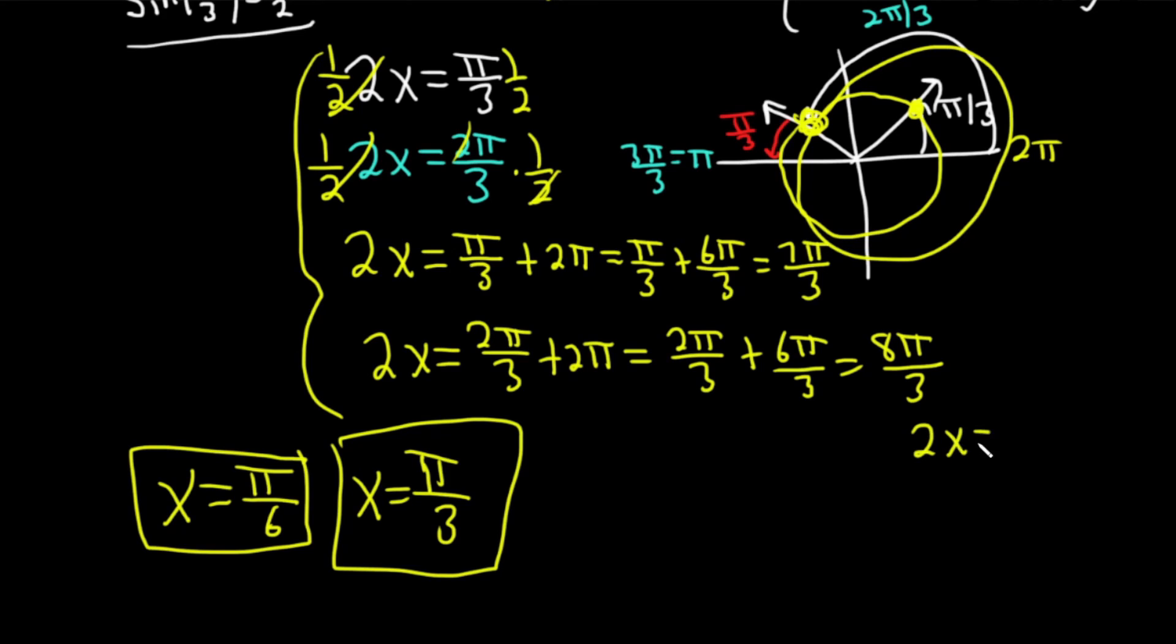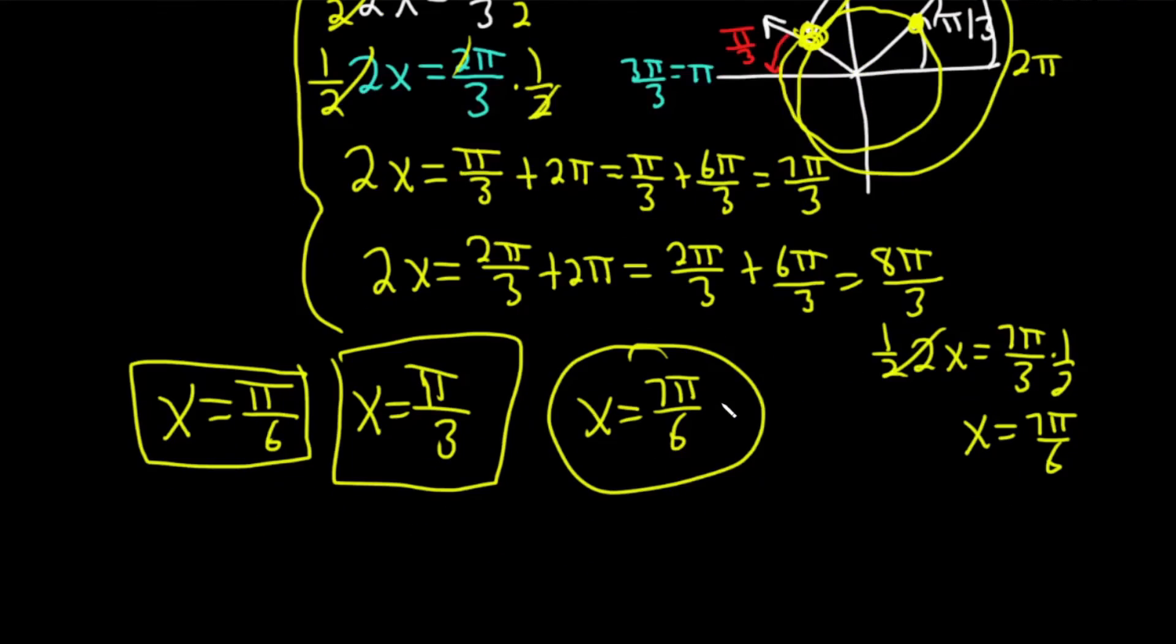And then we have 2x equals 7π over 3. I'm going to write that over here. And again, solving this one for x, multiplied by 1 half, you get x equals 7π over 6. That's another answer. x equals 7π over 6.